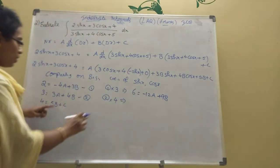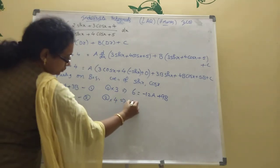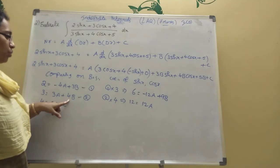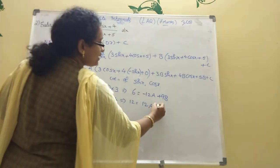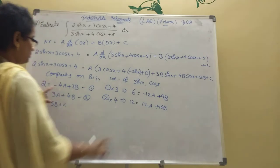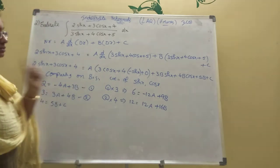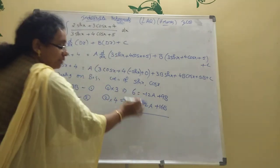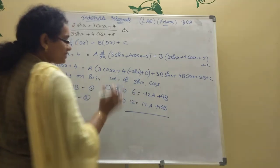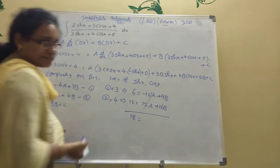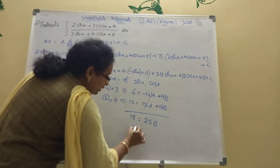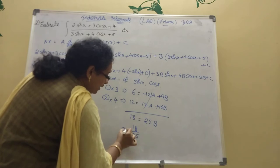Adding: 6 plus 12 equals 18, and minus 12A plus 12A cancels, leaving 9B plus 16B equals 25B. So 18 equals 25B, giving B equals 18 by 25. This fraction does not cancel further.